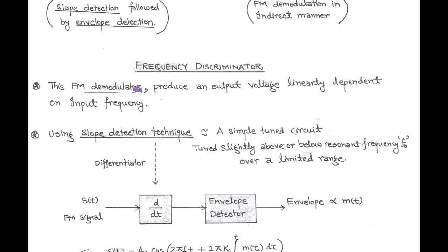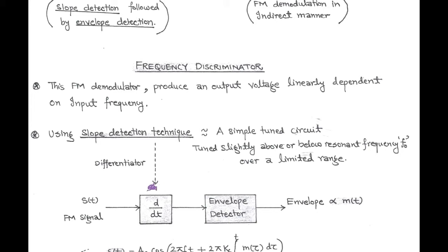Frequency discriminator is a type of FM demodulator that produces an output voltage linearly dependent on input frequency. Frequency discriminator consists of a slope detector, that is a type of differentiator, followed by envelope detection. So in frequency discriminator there is both slope detection as well as envelope detection.